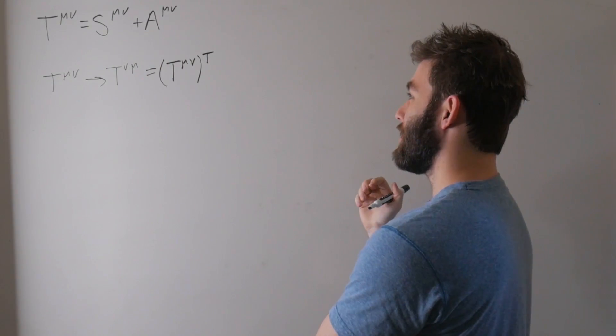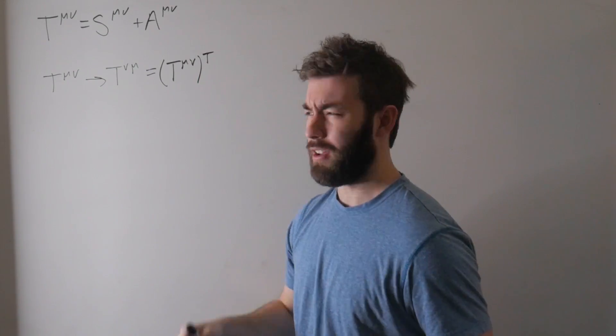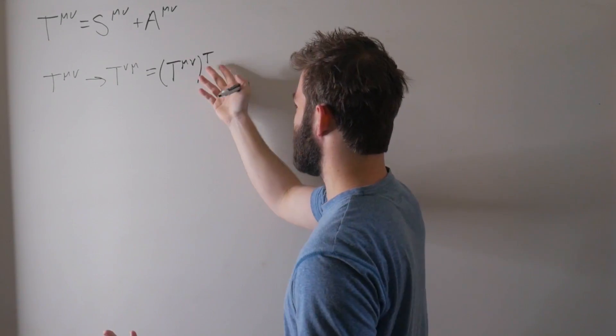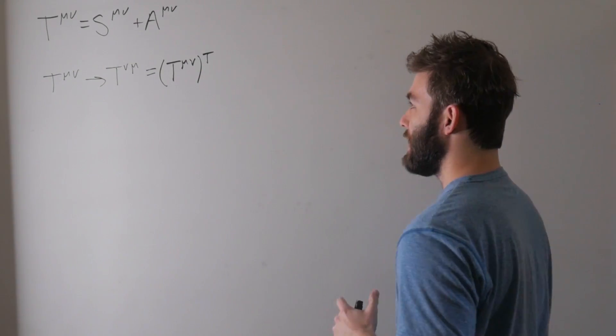So this is just equal to T^μν transpose. Wow, that's a terrible choice of a tensor name with the transpose also being a T. I think you get the idea. I'm not raising the tensor component to the power of a tensor. This is just the transpose. And when we talk about symmetry versus antisymmetry, it's all what happens to the tensor when we do this, when we take this transpose.